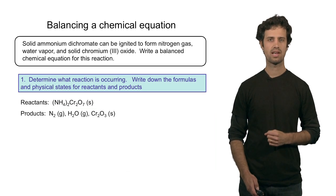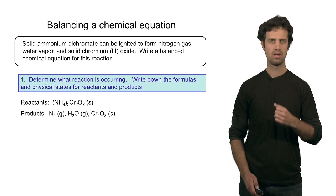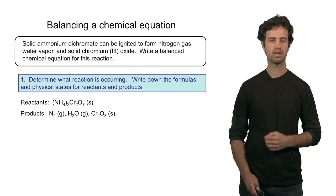On the product side we find nitrogen gas, water vapor, which is a gas, and chromium oxide, which is a solid.